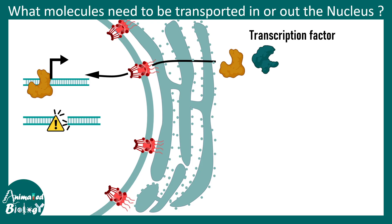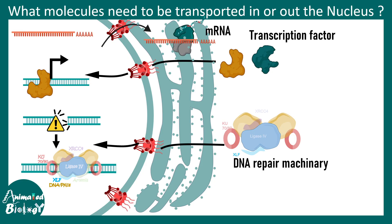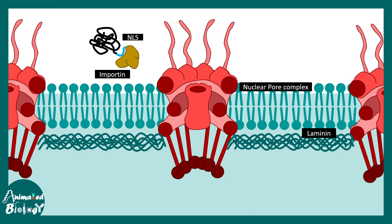Imagine there is a DNA break that has to be repaired — the repair machinery needs to first get into the nucleus, so nuclear import is important. Another scenario: there is an mRNA that has to go out in order to be translated, so mRNA has to be exported. Therefore, many biomolecules have to be imported and exported across the nuclear envelope, and that happens via a specific pore known as the nuclear pore complex, seen here in red.